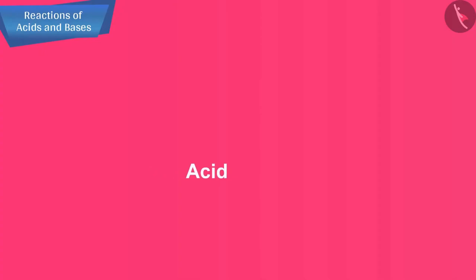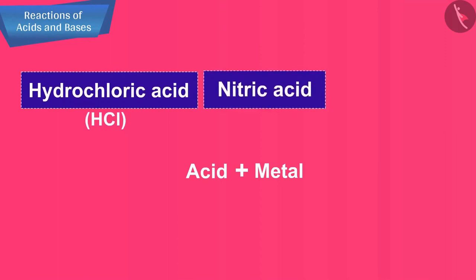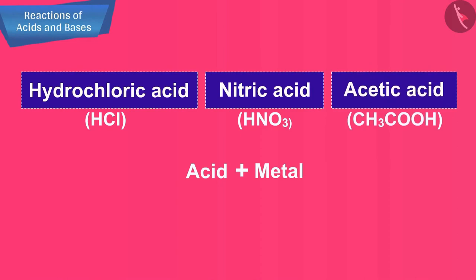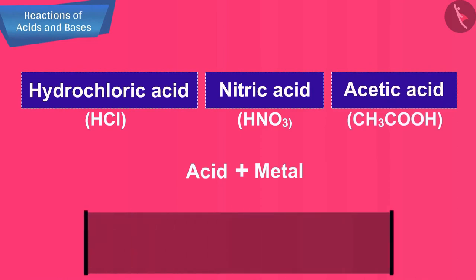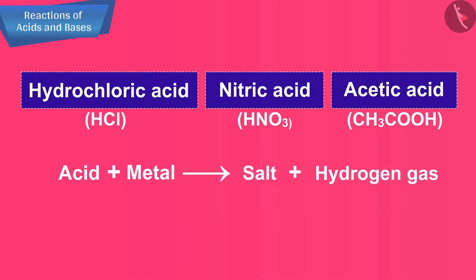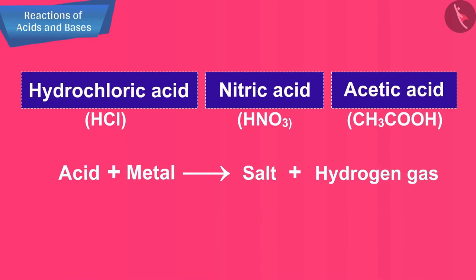Repeat this activity with more acids like hydrochloric acid (HCl), nitric acid (HNO3), and acetic acid (CH3COOH). You will observe a similar observation in all the cases. Therefore, we can conclude that metal reacts with acids to form salt and hydrogen gas.